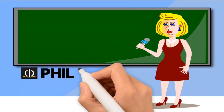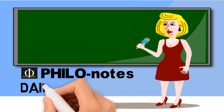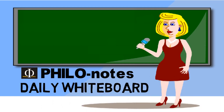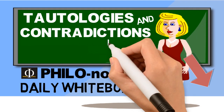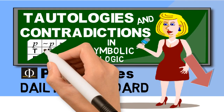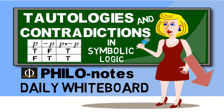Hello everyone! Welcome back to Philo Notes for another edition of our Daily Whiteboard. This is our last discussion about the introductory topics in symbolic logic. For more Daily Whiteboard editions from Philo Notes, click here to subscribe. In today's edition I will briefly discuss the topic of Tautologies and Contradictions in symbolic logic. Please note that this is just an introductory discussion, as my main intention here is just to make students in logic become familiar with this topic.